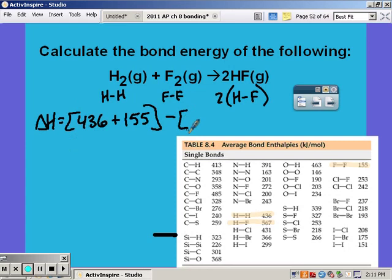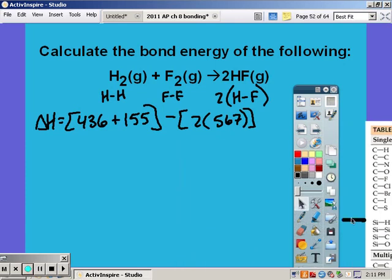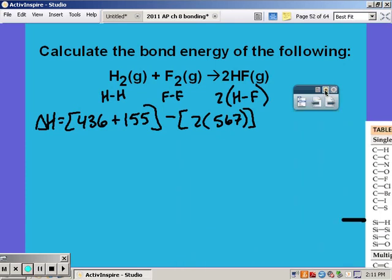The sum of that minus HF, but notice I have two of them because of the coefficient, so that's 2 times 567. Solving that out, I get negative 543 kilojoules per mole.